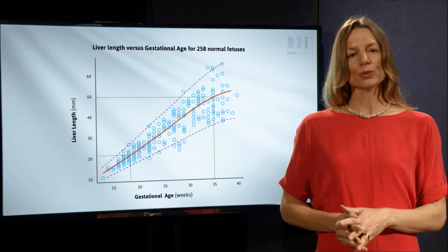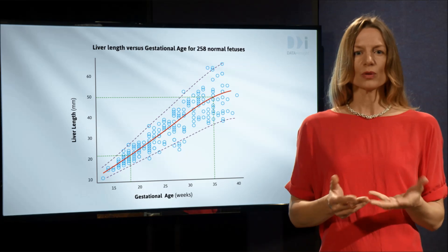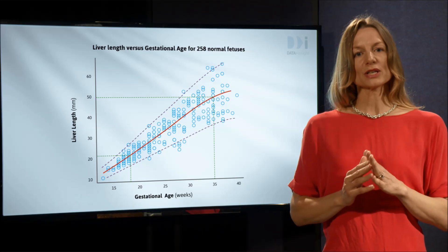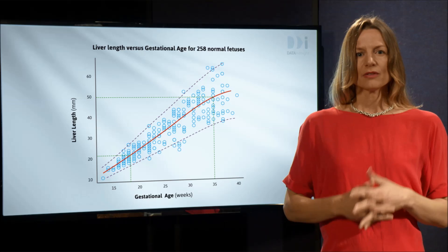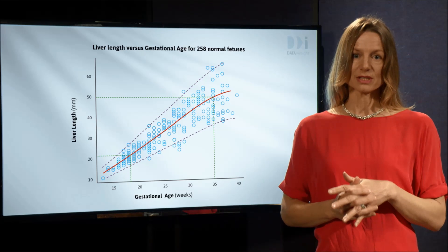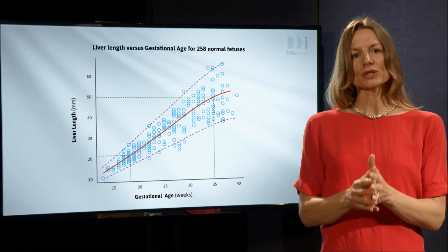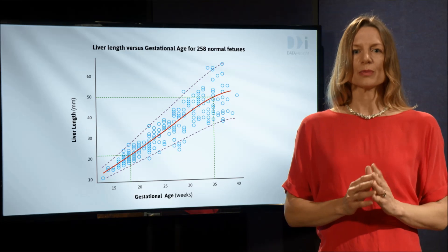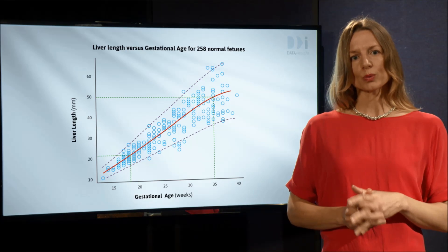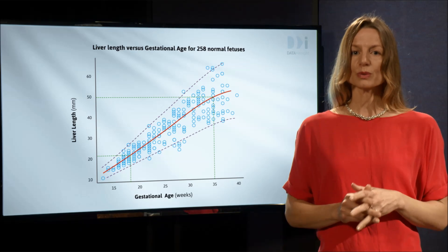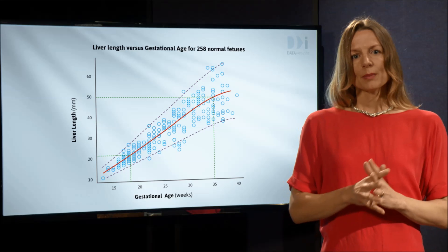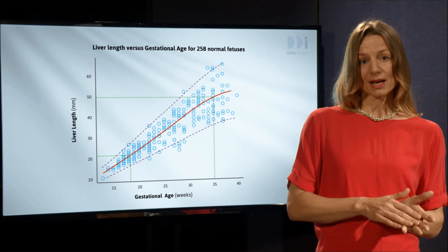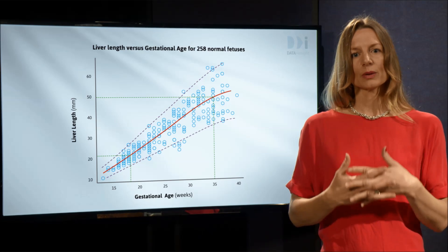Predictions from data can only work well if the data you have is representative of the way things behave in the setting in which you want to make the prediction. Data collected from major London hospitals is unlikely to work well for predicting fetus development in the poorer regions of India, for example, because fetuses there will be much smaller. Similarly, predictions that use data from the past to predict the future can only work well if the historical relationships between variables or patterns still hold. Major structural changes to the economic environment can make the way things behaved in the past largely uninformative about the way they will behave in the future.